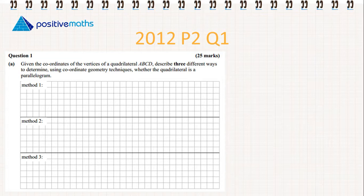Given the coordinates of the vertices of quadrilateral ABCD, describe three different ways to determine using coordinate geometry techniques whether the quadrilateral is a parallelogram. We'll draw a quick sketch. The first thing we can do is check that the opposite slopes of both pairs of sides are the same.